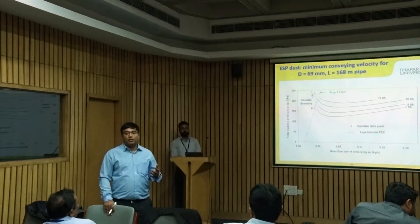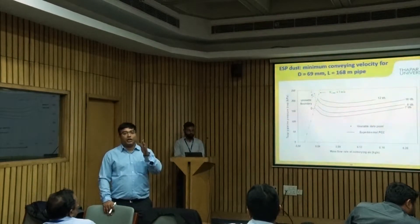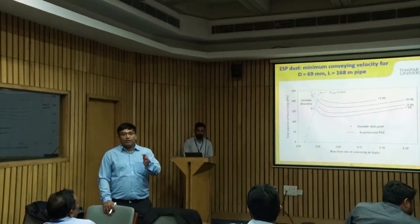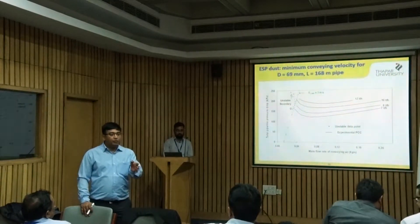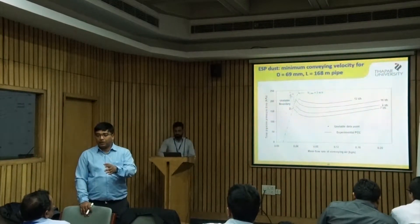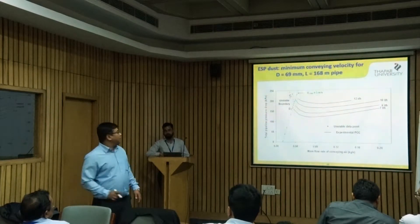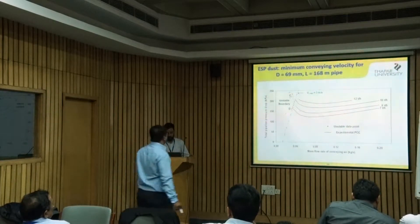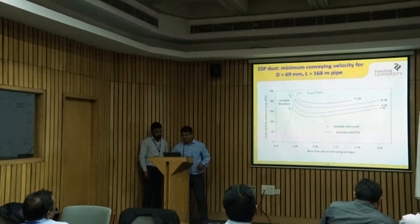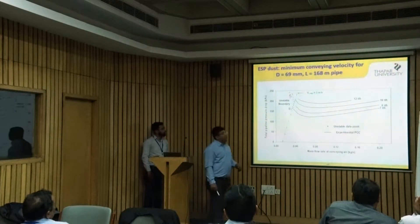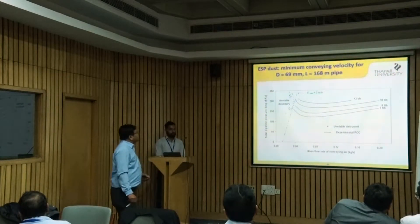Earlier, people were under the belief that for dense phase you require a certain velocity, and for a particular product that velocity is good enough. So if it is three meters per second or five meters per second, you just get that velocity and the product will flow.